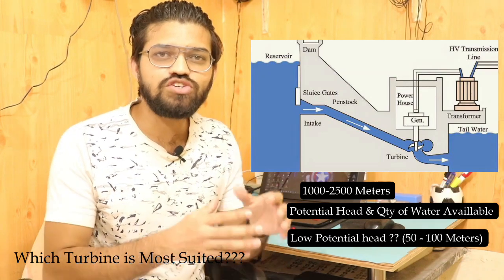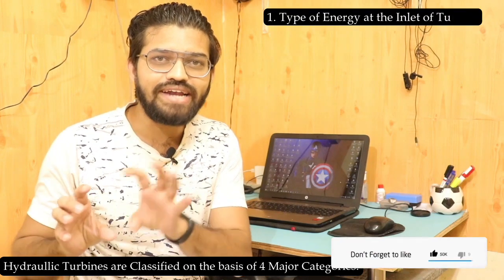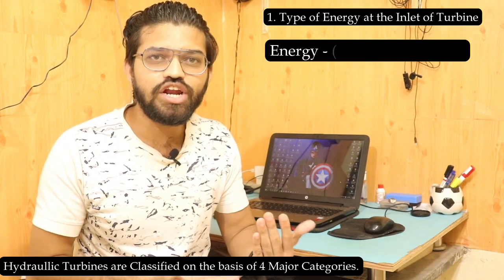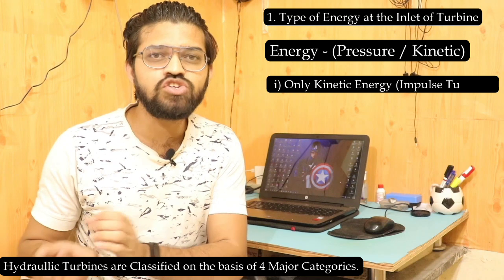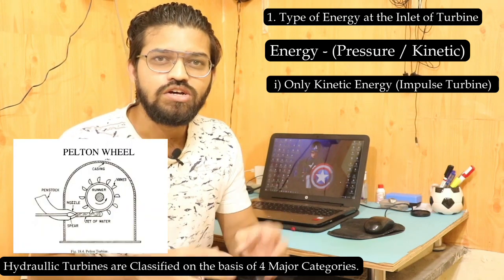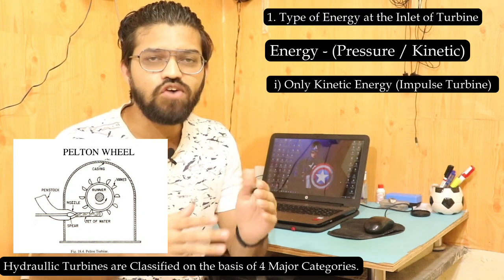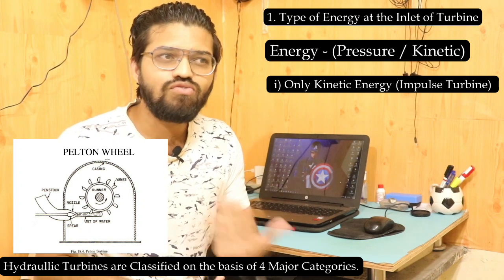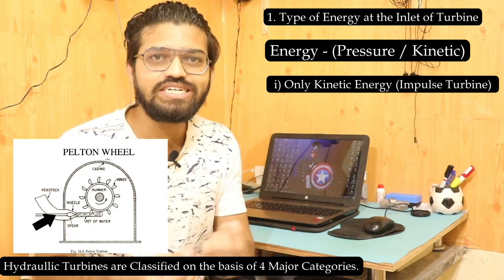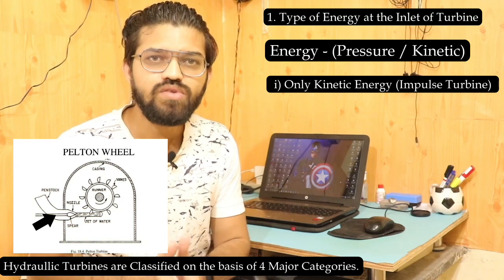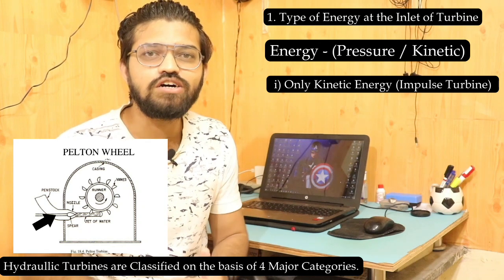To overcome this situation, hydraulic turbines can be classified into four major categories. The first classification is based on the type of energy at the inlet. That energy can be pressure energy or kinetic energy. If it is only kinetic energy, then that turbine is called an impulse turbine — such as the Pelton wheel turbine. In the Pelton wheel, the nozzle is used to convert pressure energy into kinetic energy, so this turbine uses only kinetic energy at the inlet.